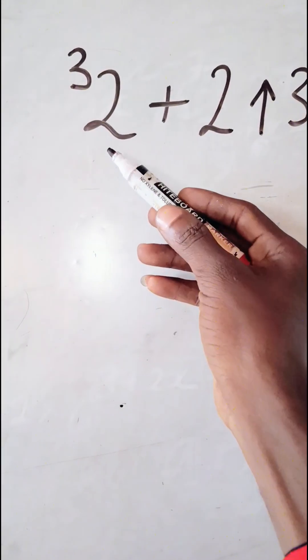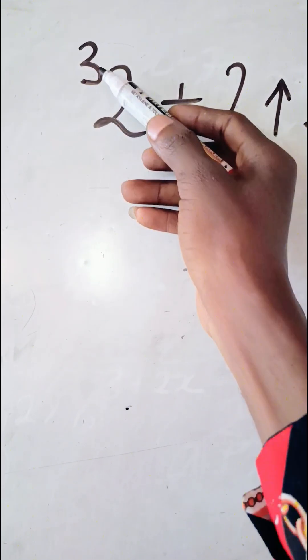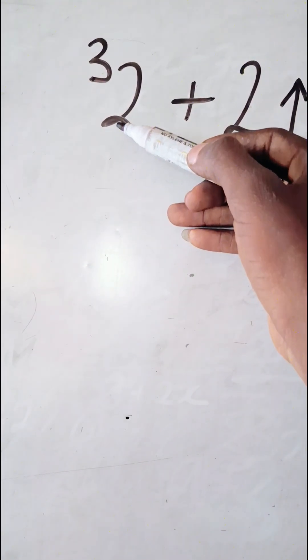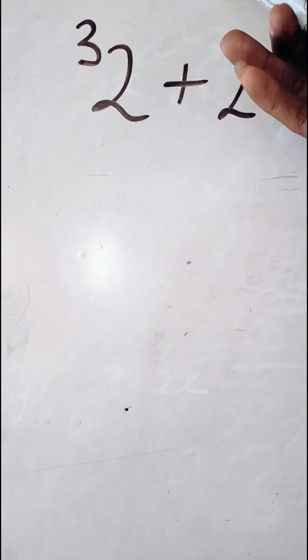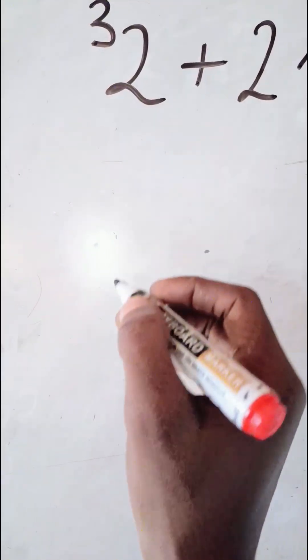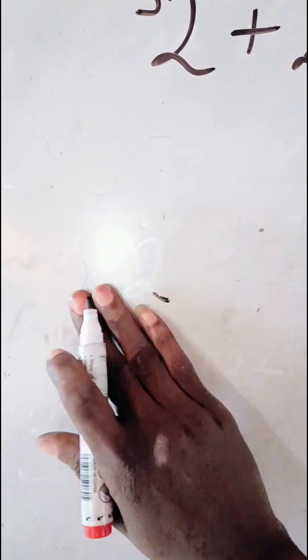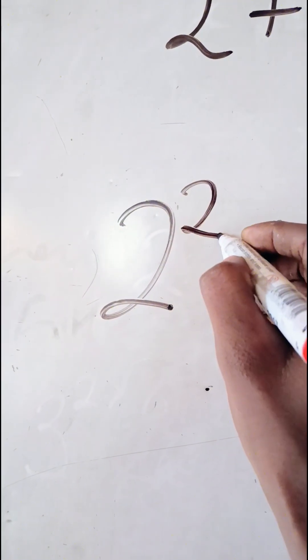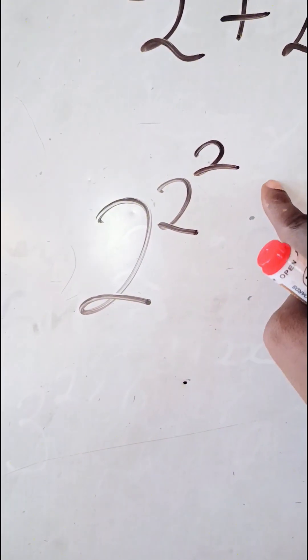So let's go on. This thing means two tetration three, simply meaning that we should stack two. I mean, we should write two raised to power two, that two that is raised power is raised to another power two. So this becomes two, two to the power of two, and then this two again is raised to the power of two. We stacked it three times.